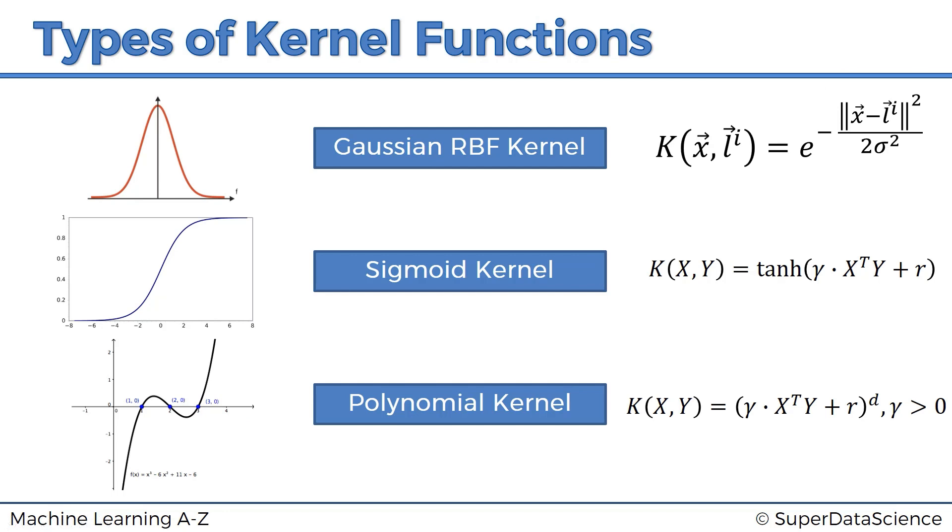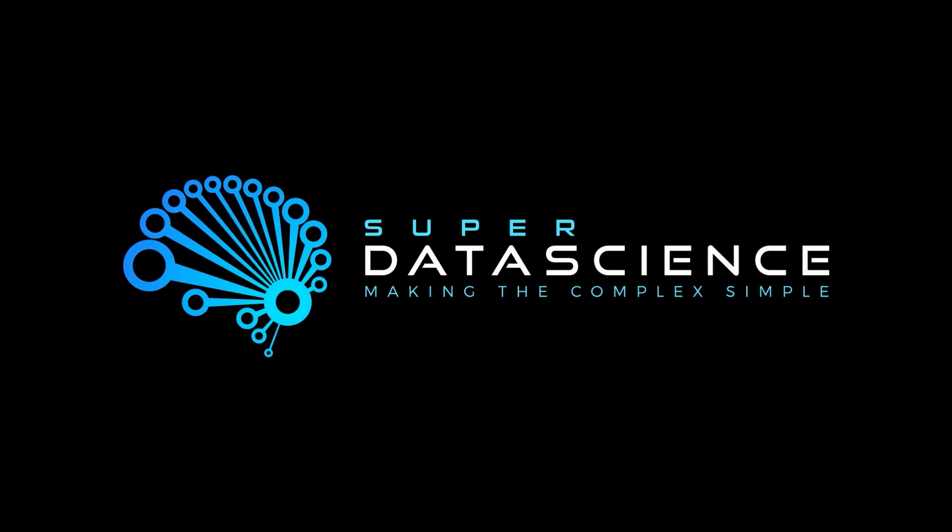This tutorial is not to discuss the specifics of each kernel, but to show you that they exist and make you aware of the different types. The most popular choices are Gaussian RBF, sigmoid, and polynomial. Now we're going to actually look at them in three dimensions. I found a really cool website where we can look at that.